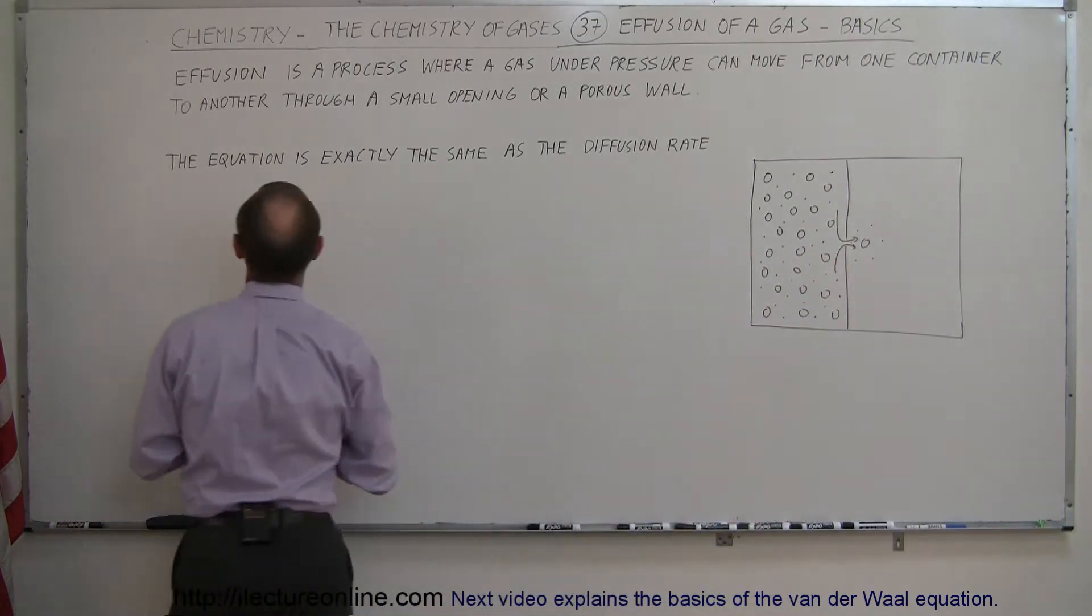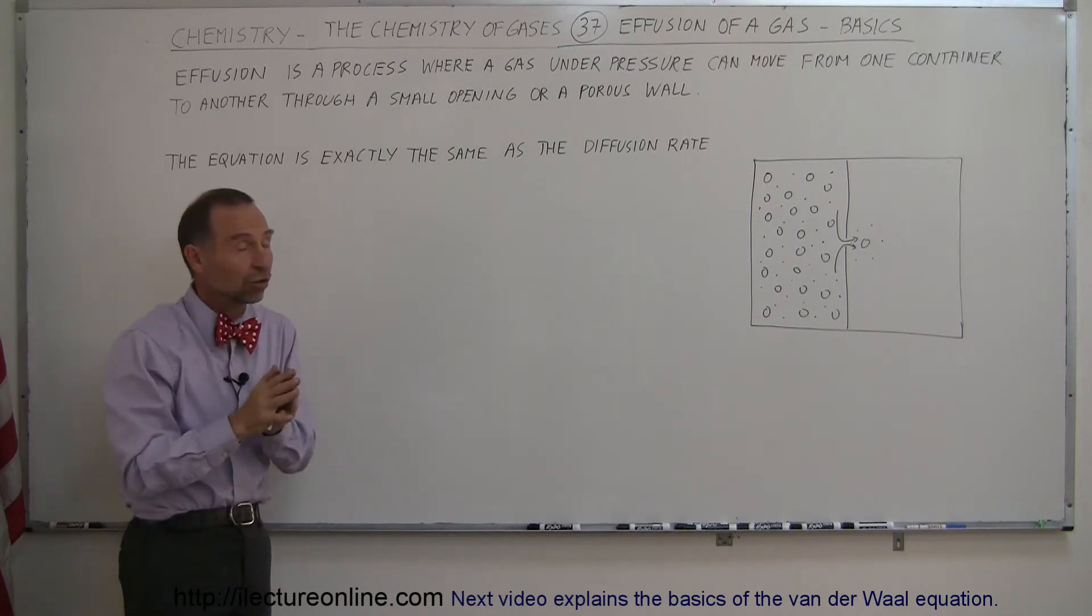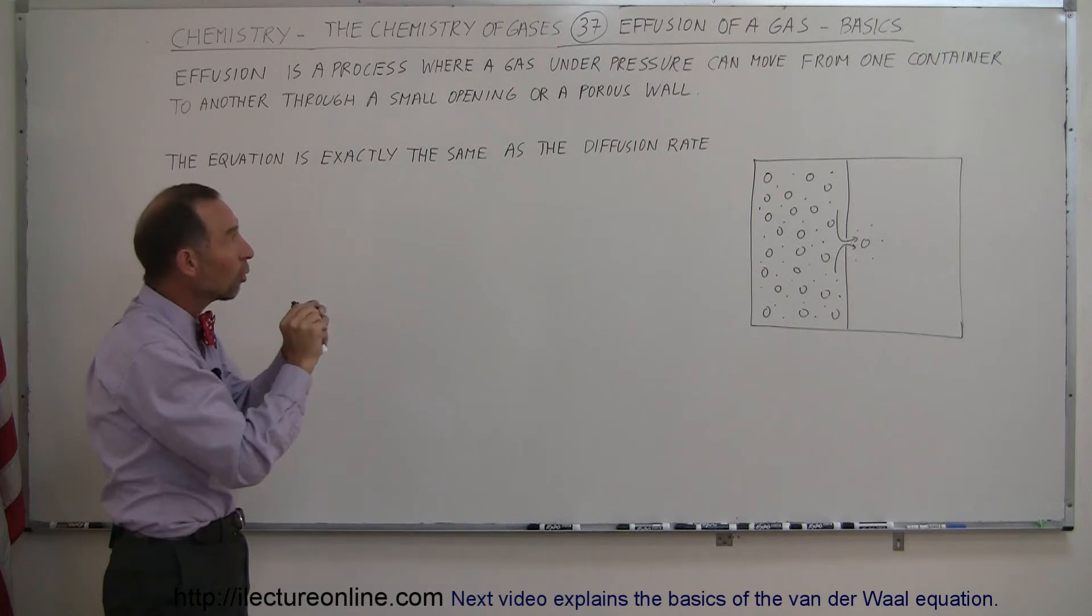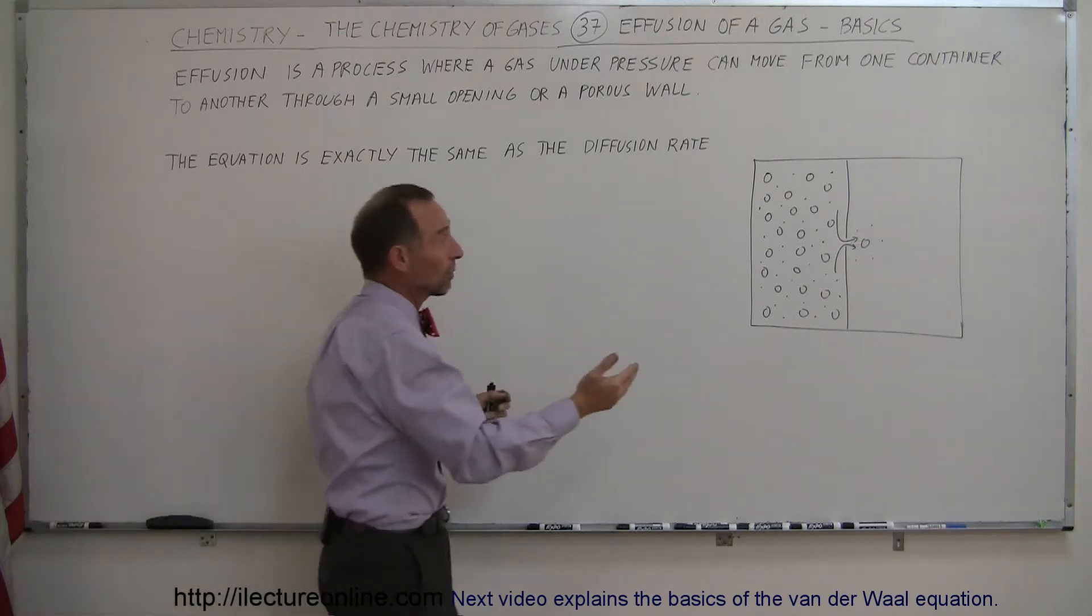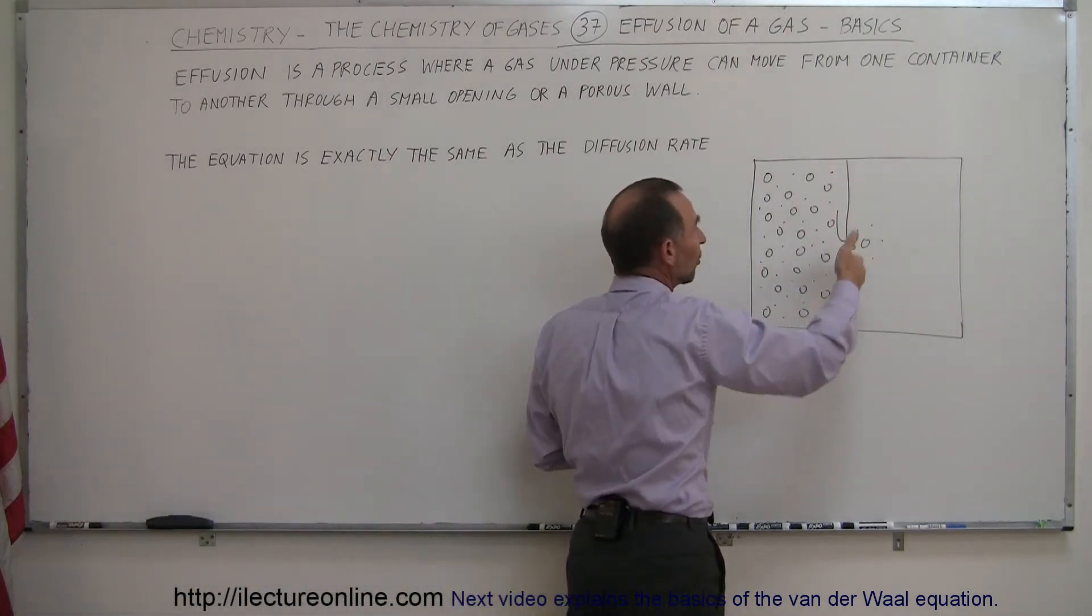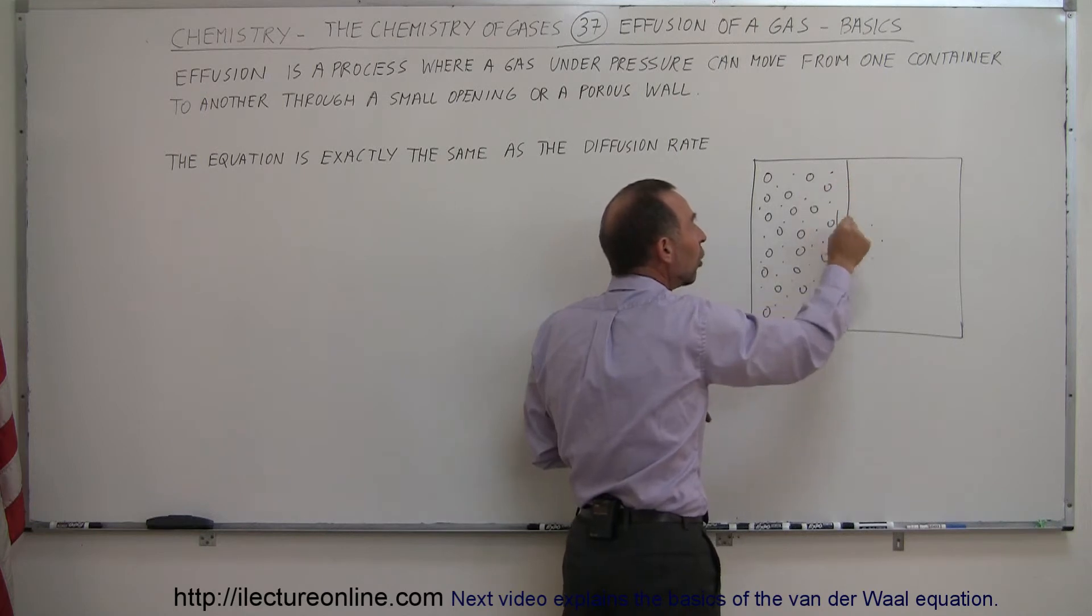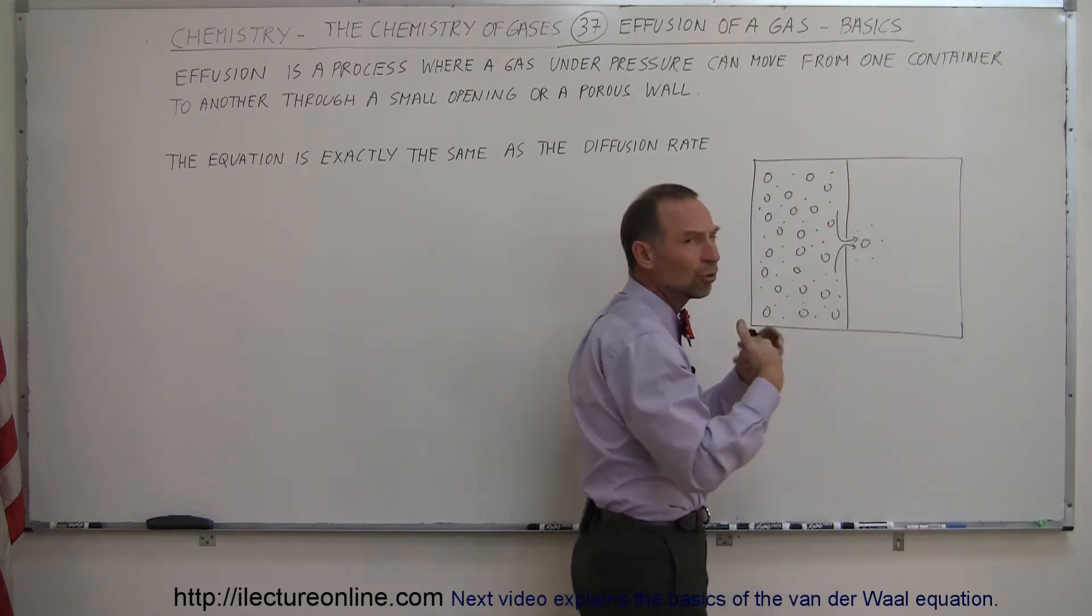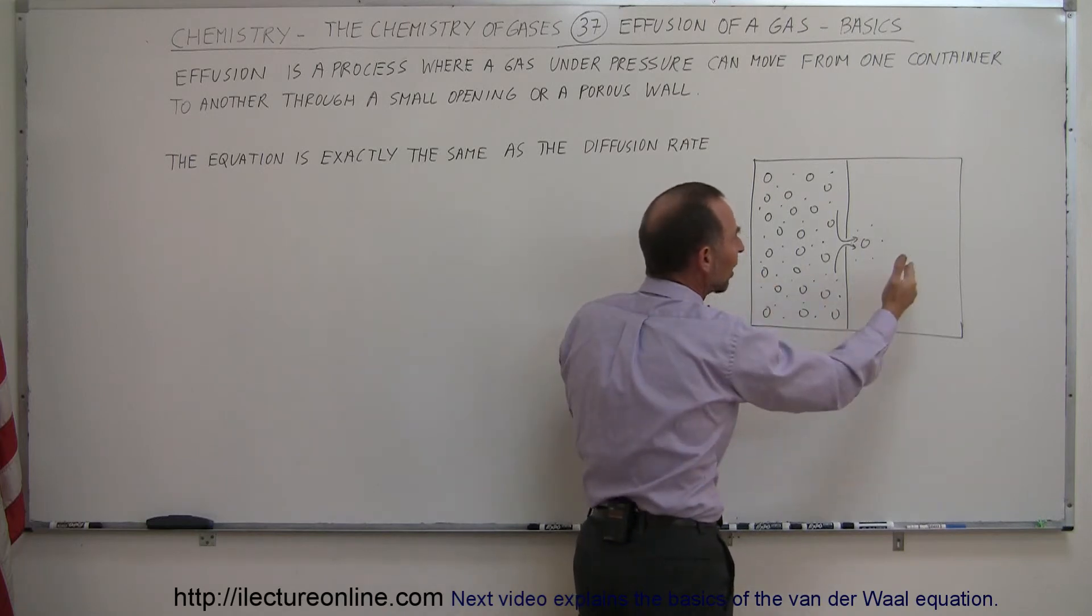So the definition here: effusion is a process where a gas under pressure can move from one container to another container through a small opening or a porous wall. So sometimes this can simply be done because the membrane in between has small tiny little openings where gas can travel through, and therefore the smaller molecules which travel much faster will make it through the other side much quicker.